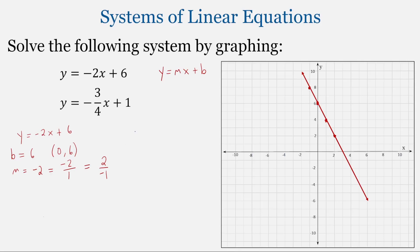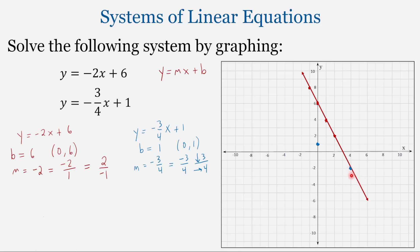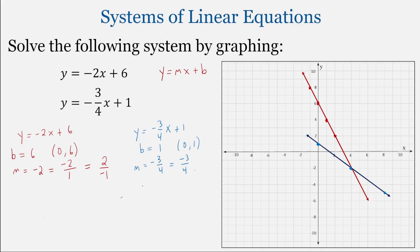Now we connect those dots to draw the first line. For the second equation, y equals negative 3/4 x plus 1, the y-intercept equals 1, giving us the point (0, 1). The slope is negative 3/4, which we write as negative 3 over 4, meaning we go down 3 and to the right 4. Starting at the y-intercept, we go down 3 and right 4, repeating that movement to plot additional points.